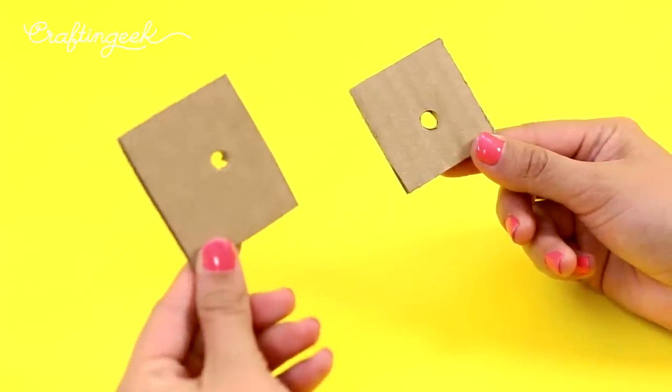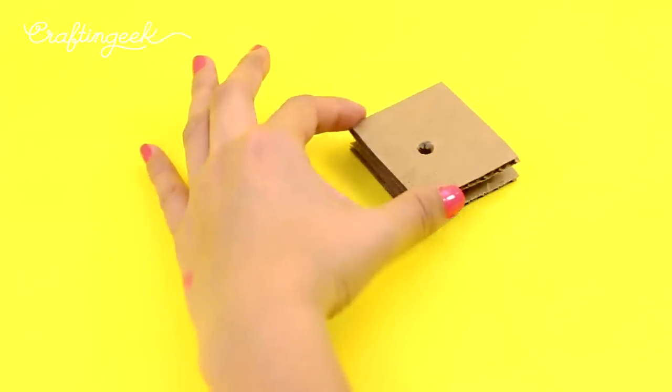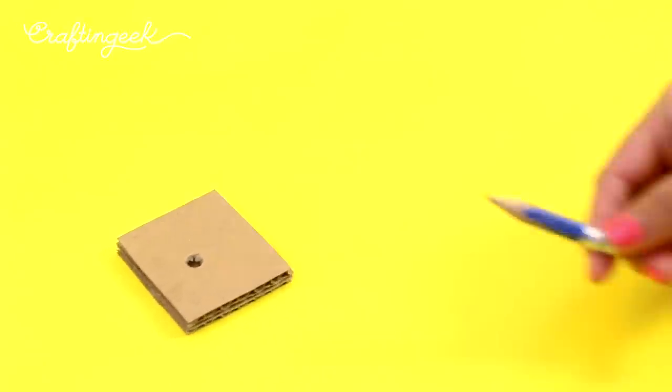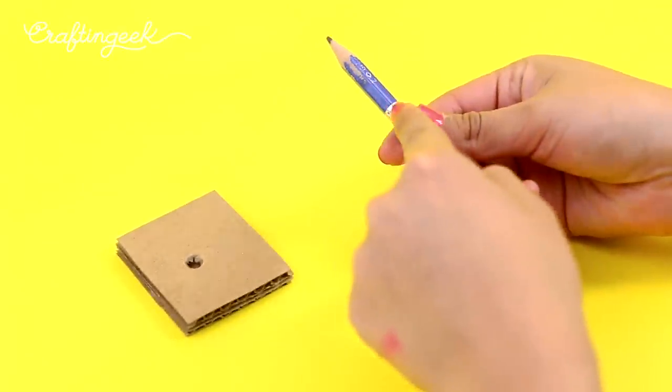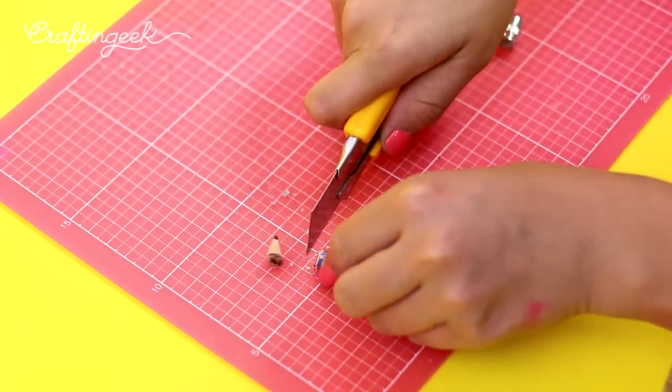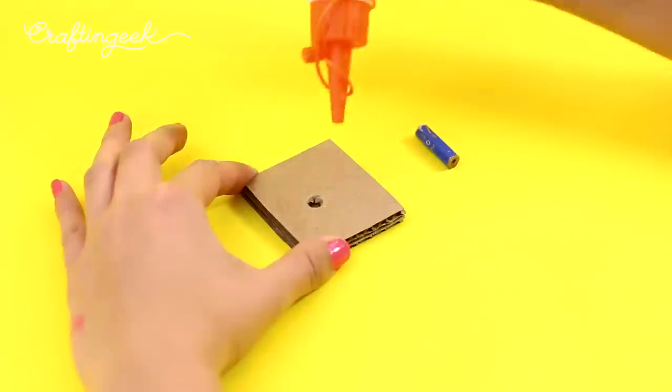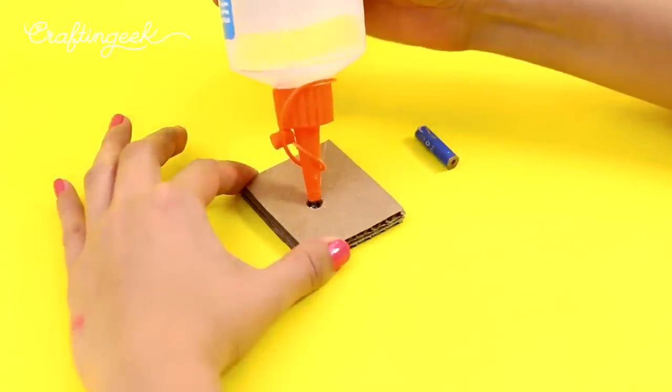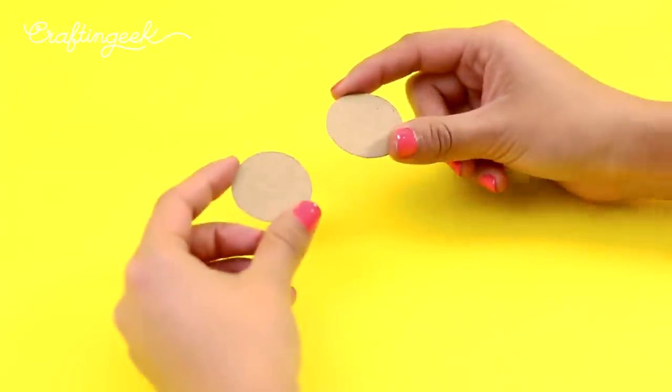Paste the two squares and I'm going to reuse a small pencil that I had so that it can be the stick that holds the piece. I'm just going to take off the back part and the tip and I'm going to paste it on the base using silicone.